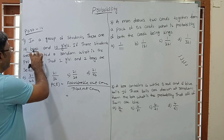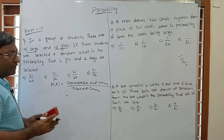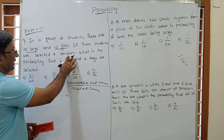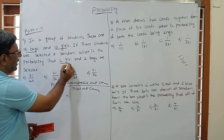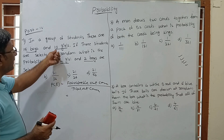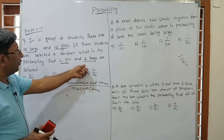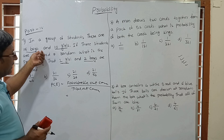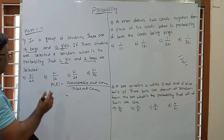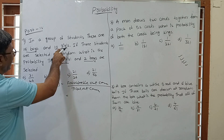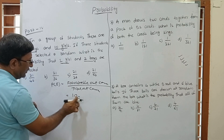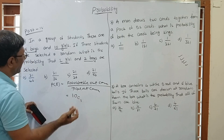There are 15 boys and 10 girls, that is total 25. We want 1 girl and 2 boys selected. So our favorable outcome is: 1 girl from 10 girls and 2 boys from 15 boys. From total 25 we need 3. The favorable outcome uses 10C1 for 1 girl from 10 girls.